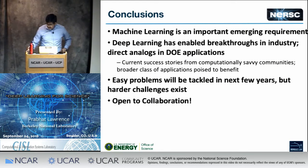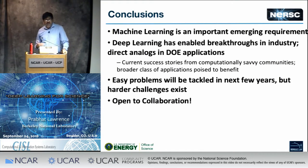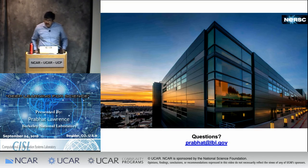To conclude: machine learning, deep learning, and advanced statistics are important emerging requirements in the DOE community, and you're going to see that in the NSF and potentially at NCAR as well. Deep learning has definitely enabled breakthroughs in industry with close analogs to what scientists need. Right now, results are coming from computationally savvy communities — high-energy physicists, cosmologists, astronomers — but there's a broader class of domain scientists that can benefit. There will be a lot of easy problems to tackle in the next few years, but harder challenges to think about in the long term. There's a lot of room to collaborate: NERSC has certain core competencies in the DOE, and there are complementary strengths that a place like NCAR has. Thank you.